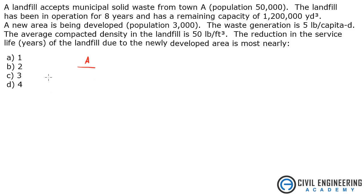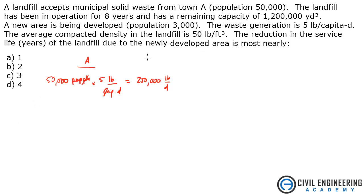We have 50,000 people times 5 pounds per capita per day — the people units cancel. That gives us 250,000 pounds per day that we are generating. Now using our density, we take 250,000 pounds per day and divide that by 50 pounds per cubic foot, which gives us 5,000 cubic feet per day. Pounds cancel.